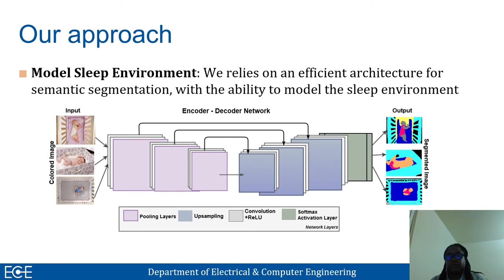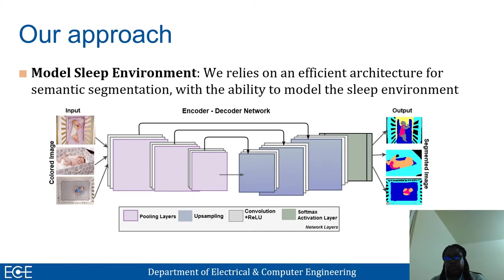We developed a model to assess the sleep environment using semantic segmentation. In order to train that model, we built a dataset where each image was independently annotated to capture variability across five different domains: the location, the surface, the position, and the presence of items in the sleep area. We manually labeled each pixel in every image according to the class it belongs to.